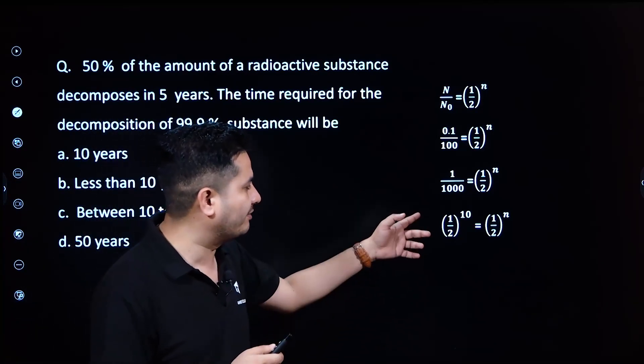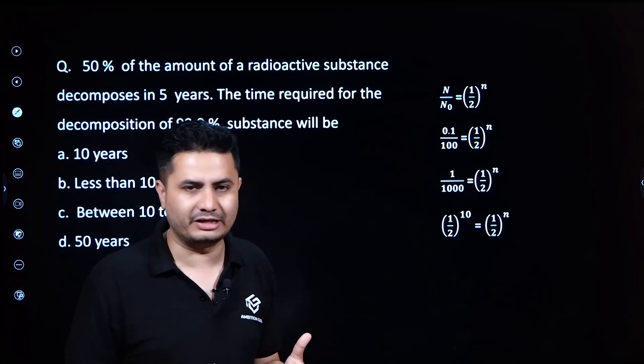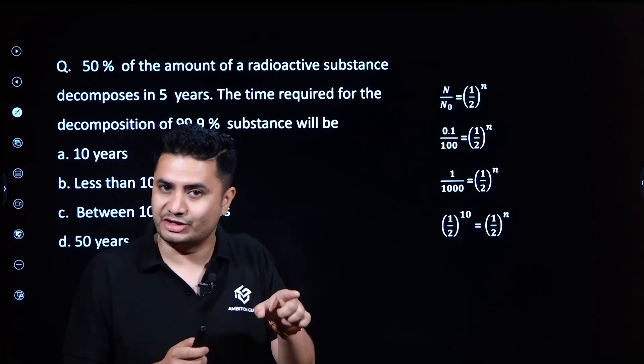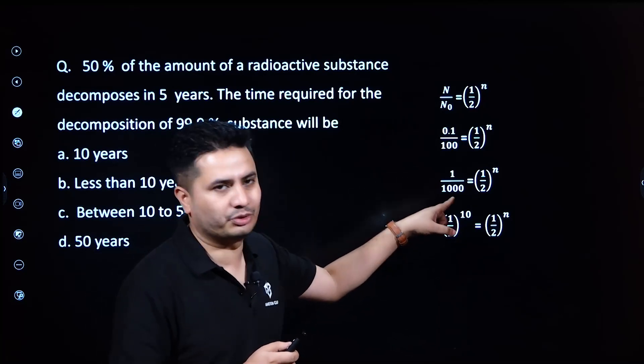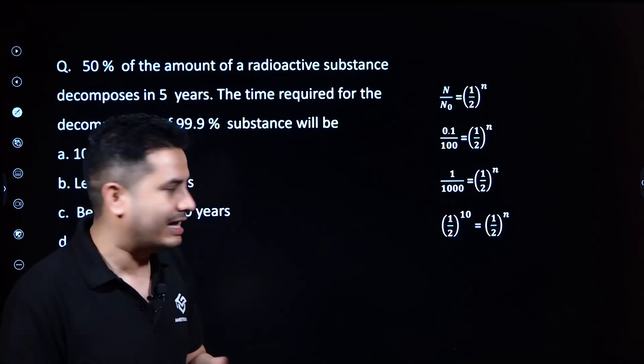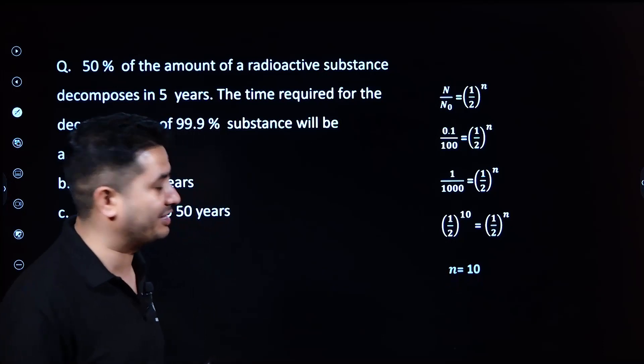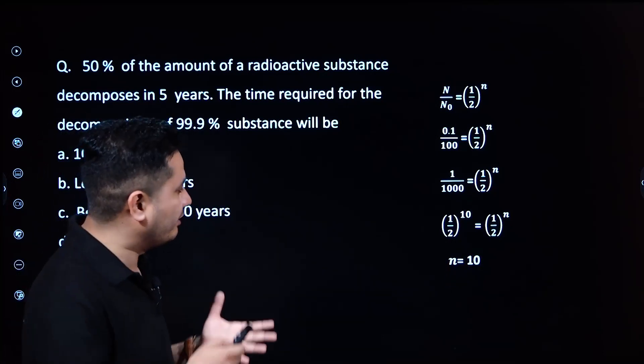Since (1/2)^10 equals 1/1024, which is nearly 1/1000, the value of n, which is the number of half-life periods, equals 10.